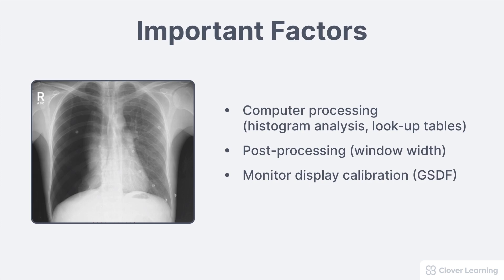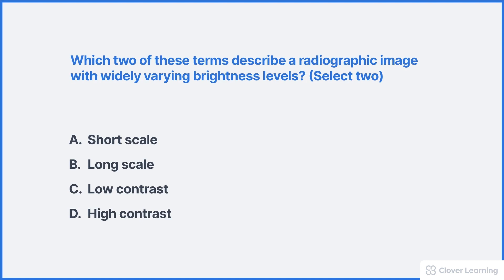Think you understand contrast? Here's a question: which two of these terms describe a radiographic image with widely varying brightness levels? The correct answers are A and D — short scale and high contrast. An image with a short gray scale has high contrast, meaning there is a wide variation in brightness levels throughout the image: more black and white and less gray.